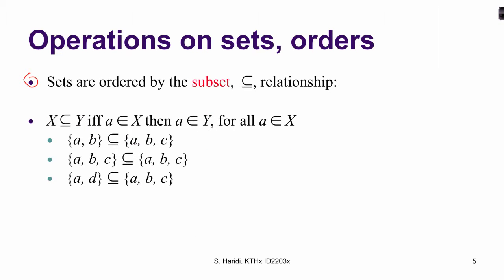So sets are ordered by a subset relation, and this is the notation you write it for subset relation. And when we write something like this, we say that X is a subset of Y. So what do we mean by this? We mean that each element of X is also an element of Y. So saying it formally, this is the definition: if A is the element of X, then A is the element of Y, and that holds for all elements of X. So it is clear here that the set AB is a subset of the set A, B, and C.